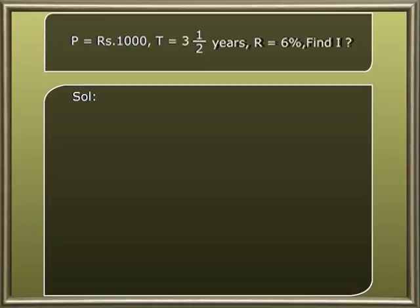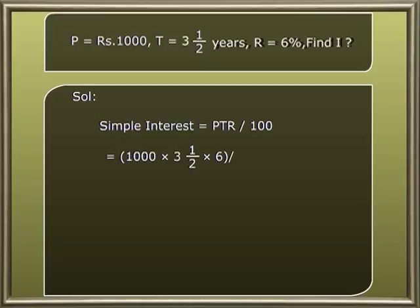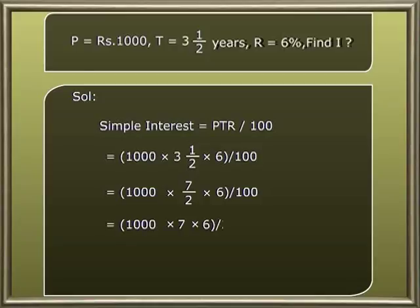Substituting the values: 1000 into three and a half into six, whole divided by hundred. That is 1000 into seven by two into six, whole by hundred. Taking the denominator down: 1000 into seven into six, whole by two into hundred. On solving, simple interest equals rupees 210.